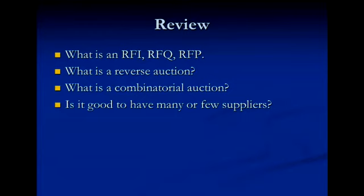A combinatorial auction allows suppliers to bid on collections of items. These are used with transportation lanes or airline gates where a group of items might be better than the whole. Is it good to have many or few suppliers? The many-supplier approach says you'll get a fair price because everybody's bidding on it. The few-supplier approach says you may develop better relationships with your suppliers.